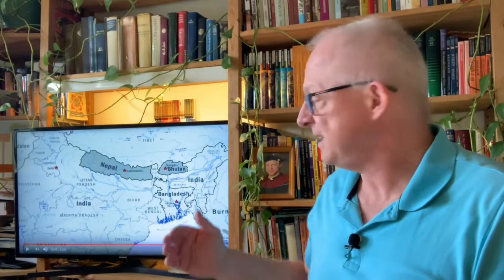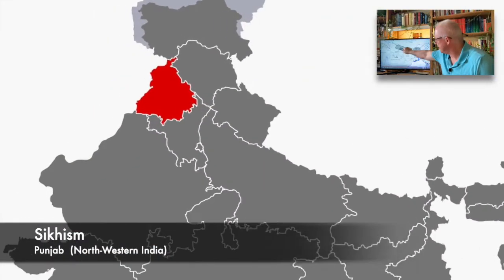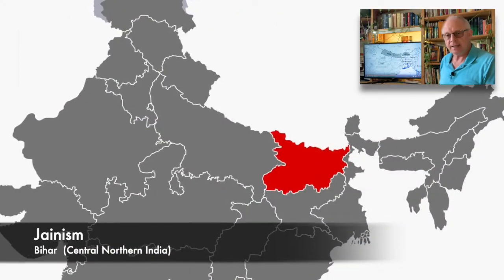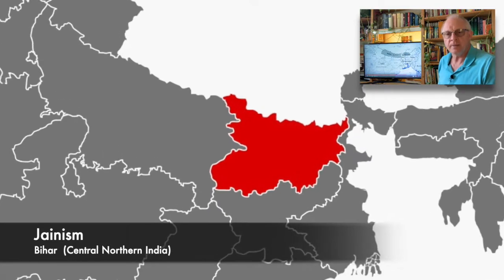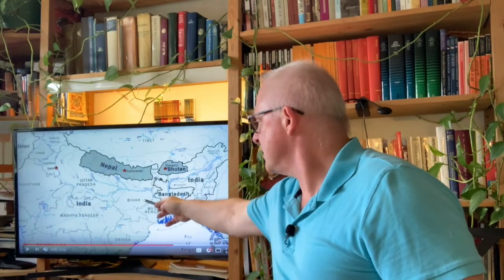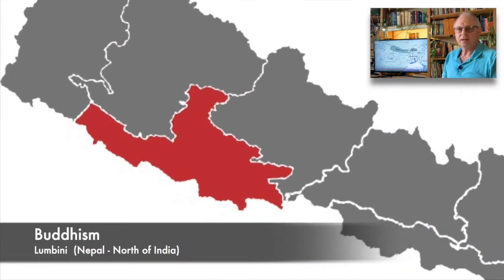Buddhism is also the fourth religion that we see originating from Northern India. Remember when we had Sikhism, we went all the way down to the Punjab region, all the way to the western part of Northern India. Then when we had Jainism and the beginning with Mahavir, we went to the Bihar region right here. And now we're just going a little bit north to what is Nepal today, but back then was called Lumbini.